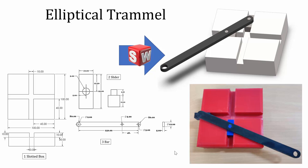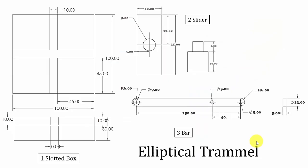Hello all, welcome to the SOLIDWORKS tutorial. In this video, I am going to show you how to model the elliptical trammel and how to convert it into a 3D printable file. In the elliptical trammel, there are three parts. We are going to draw them one by one, and finally convert it into 3D printable format.